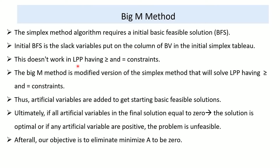And here comes the Big M method. The Big M method is a modified version of the simplex method that solves linear programming problems having greater-than-or-equal-to constraints. In this case, we introduce artificial variables to get a starting basic feasible solution.